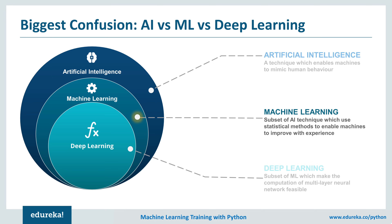Machine learning is a subset or current application of AI. It is based on the idea that we should be able to give machines access to data and let them learn by themselves. It is a subset of artificial intelligence that deals with the extraction of patterns from datasets. This means the machine can not only find rules for optimal behavior, but also adapt to changes in the world. Many of the algorithms involved have been known for decades — even centuries — and thanks to advances in computer science and parallel computing, they can now scale up to massive data volumes.